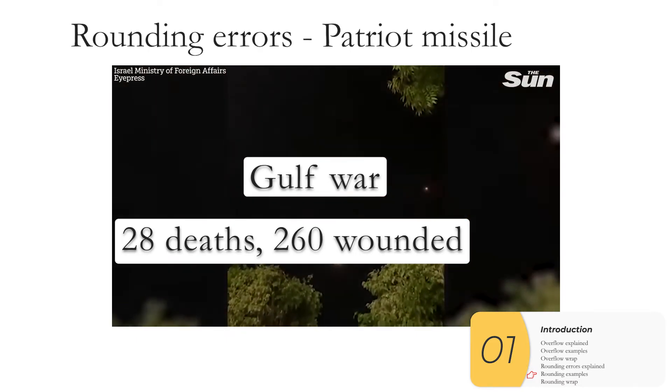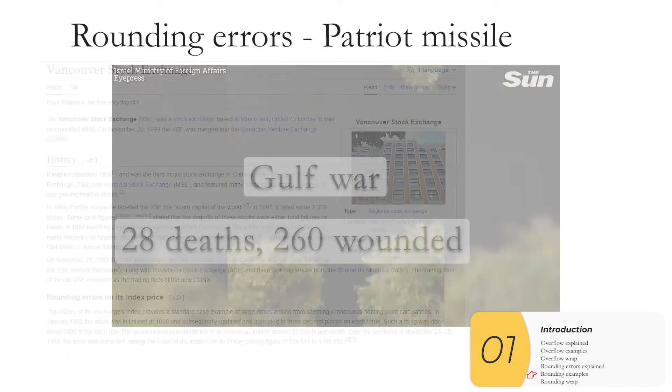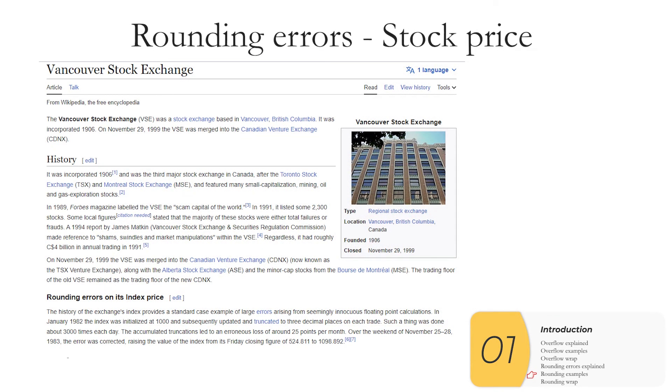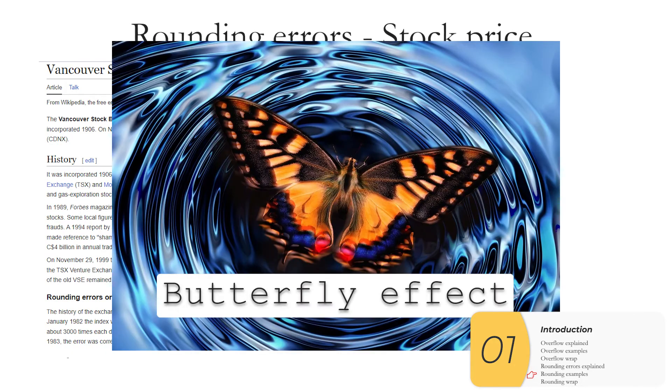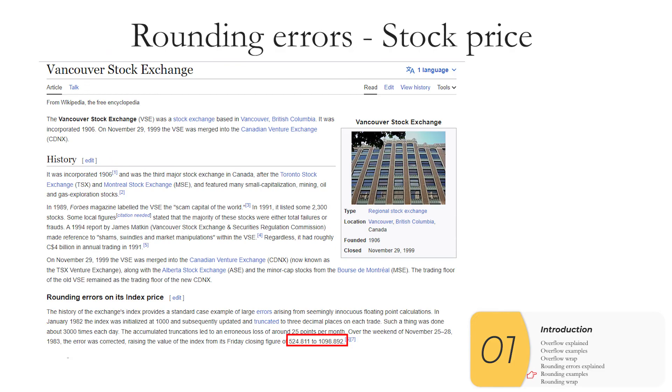And then you have this example here, where because of tiny, tiny errors that get compounded and compounded over time, we call this the Butterfly Effect, the value of the stock index was two times off. So those are examples of rounding errors in the real world.